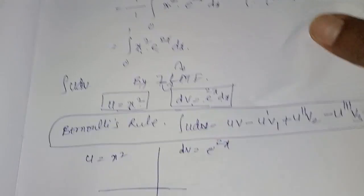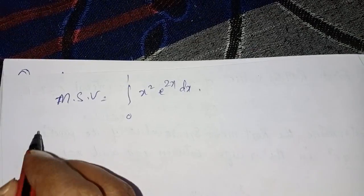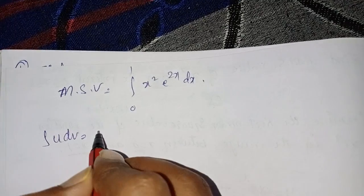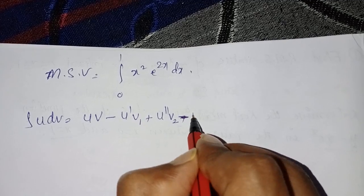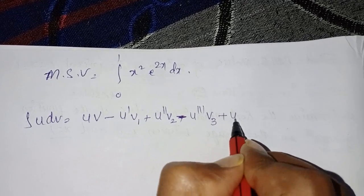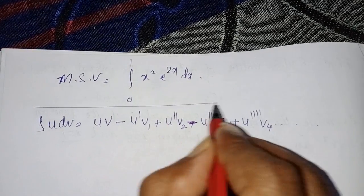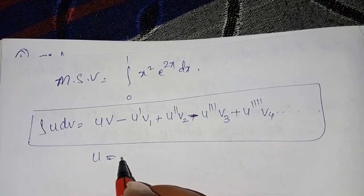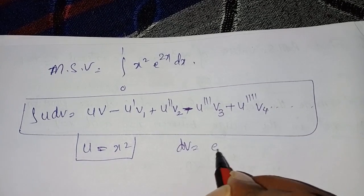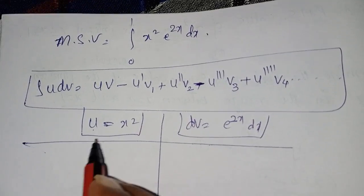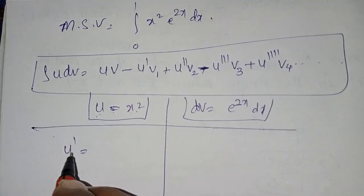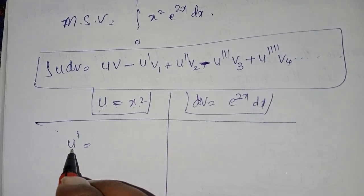MSV = ∫[0 to 1] x²·e^(2x) dx. Applying Bernoulli's rule: ∫u dv = u·v − u'·v₁ + u''·v₂ − u'''·v₃ + ... We know u = x². Differentiating: u' (first derivative) = 2x. Differentiating again: u'' (second derivative) = 2.